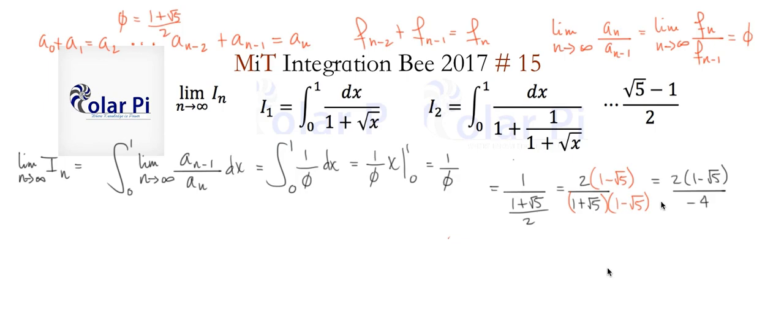And then this 2 and this negative 4 can cancel so that we have just a negative 2 in the denominator and no longer a 2 there. And then if we multiply by negative 1 top and bottom, we're going to get root 5 minus 1 over 2 as desired.